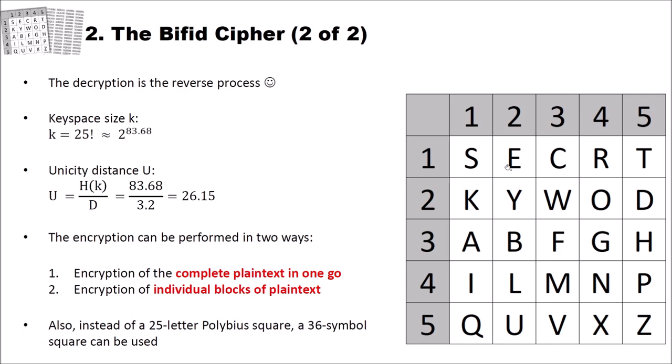Now let's have a look at the unicity distance of the bifid cipher. The unicity distance is the minimum length of ciphertext that you need that you can expect only one solution, only one possible plaintext. When you go below this unicity distance, with very high probability you get more than one valid solutions that are not indistinguishable for an attacker. The unicity distance u is the entropy of the keyspace divided by the redundancy of the language. The entropy of the keyspace is the log 2 of the keyspace size, which in our case is 83.68. The redundancy of the English language is 3.2. When we divide these numbers, we get as a result 26.15, which means that a ciphertext should have a minimum length of 27 that we can expect a unique solution.